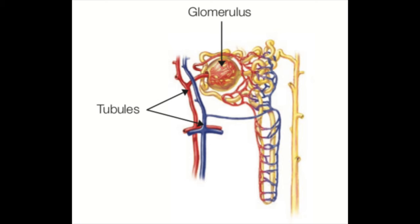Each nephron contains a glomerulus, which functions as an individual filtering unit. It also contains tubules for secretion and absorption of substances. Blood leaves the heart, enters the abdominal aorta, and enters the kidney through the renal artery. The renal artery divides into seven branches of arterioles until it becomes the afferent arteriole. The afferent arteriole carries blood to the glomerulus, where it is filtered. It then leaves the glomerulus through the efferent arteriole and is returned to the venous system. This system branches into many larger vessels until it becomes the renal vein.